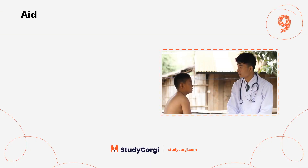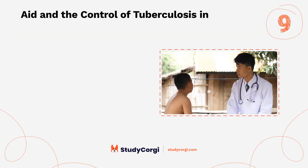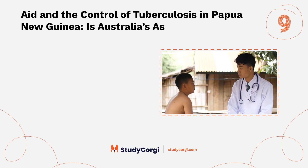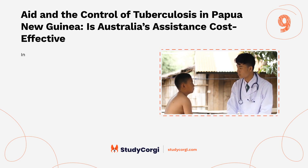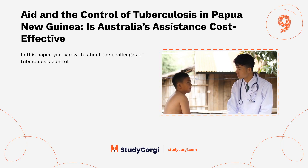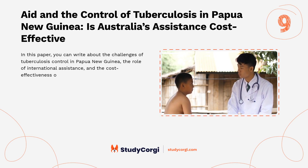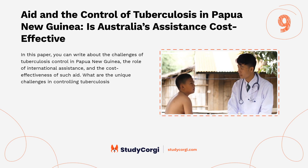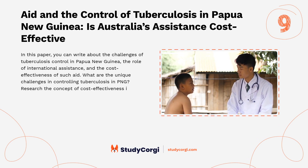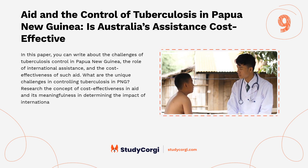Aid and the Control of Tuberculosis in Papua New Guinea — Is Australia's Assistance Cost-Effective? In this paper, you can write about the challenges of tuberculosis control in Papua New Guinea, the role of international assistance, and the cost-effectiveness of such aid. What are the unique challenges in controlling tuberculosis in PNG? Research the concept of cost-effectiveness in aid and its meaningfulness in determining the impact of international assistance programs.